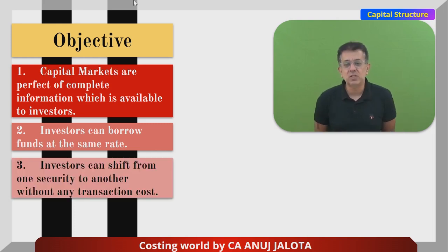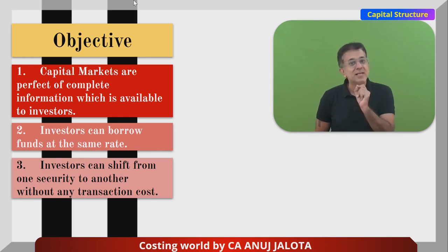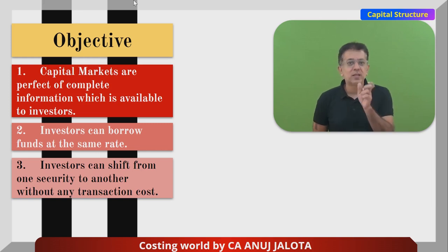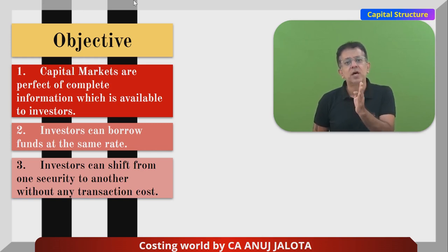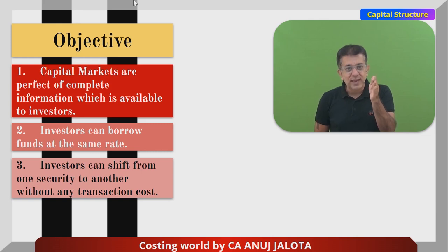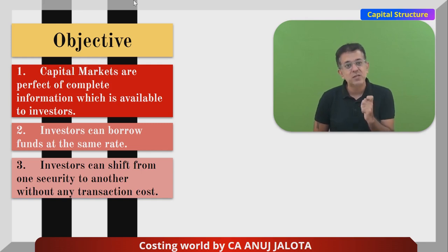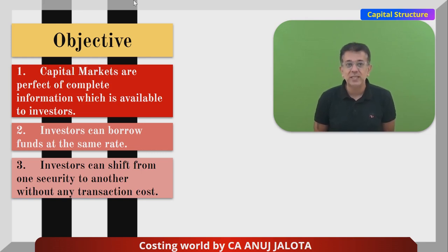Assumption number three: investors can shift from one security to another without any transaction cost. For example, there is one levered company with debt — higher leverage means higher risk. There is another unlevered company with no debt. If an investor shifts from the levered to the unlevered company, there is no STT (securities transaction tax) — the full amount can be invested in the other company. No shifting cost. This was also required for arbitration.